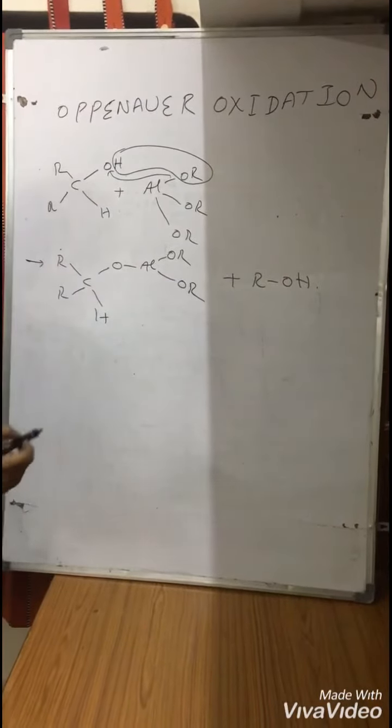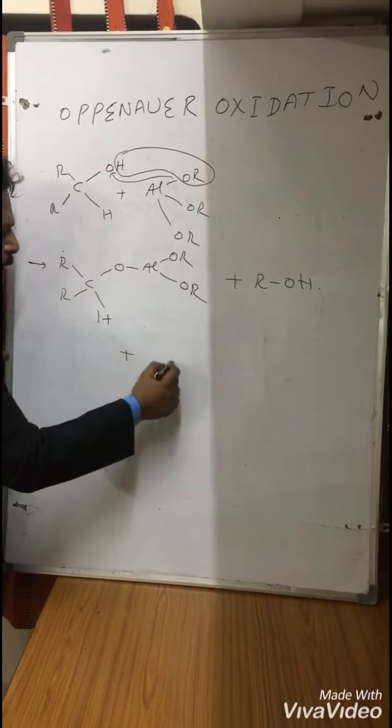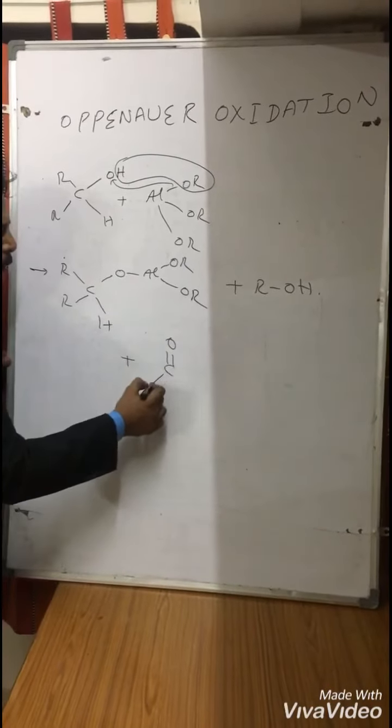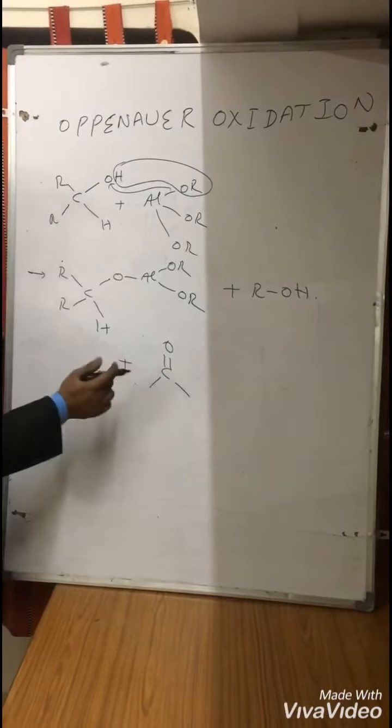Now if you take ketone C double bond O, like this. This is ketone. What happens?